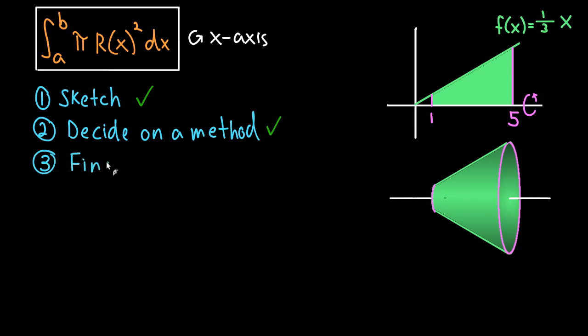So step three is find a and b. If you notice in our formula, there's these bounds of integration, so we have to figure out what those are. In the disk method, those bounds of integration are the leftmost and rightmost point of the area that's trapped.